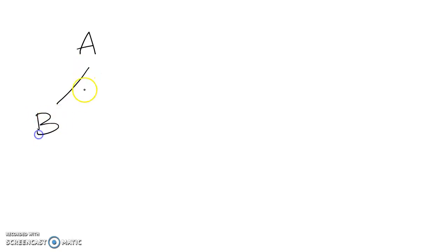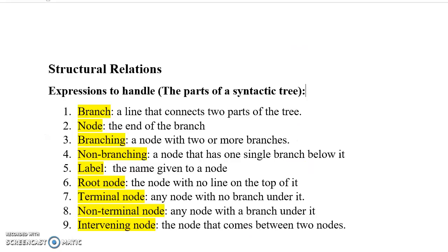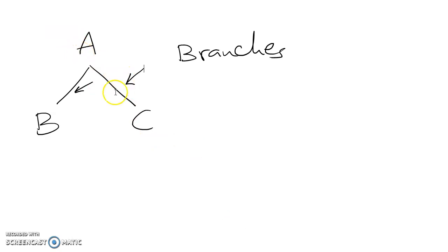So at the beginning, it's good to have a tree — not a real tree, but just to get the expressions. Suppose that we have this tree that starts by A, and under it we have two branches. We will call these lines and other lines similar to them as branches. A branch is a line that connects two parts of the tree — this branch connects A with C, and this branch connects A with B, and so on.